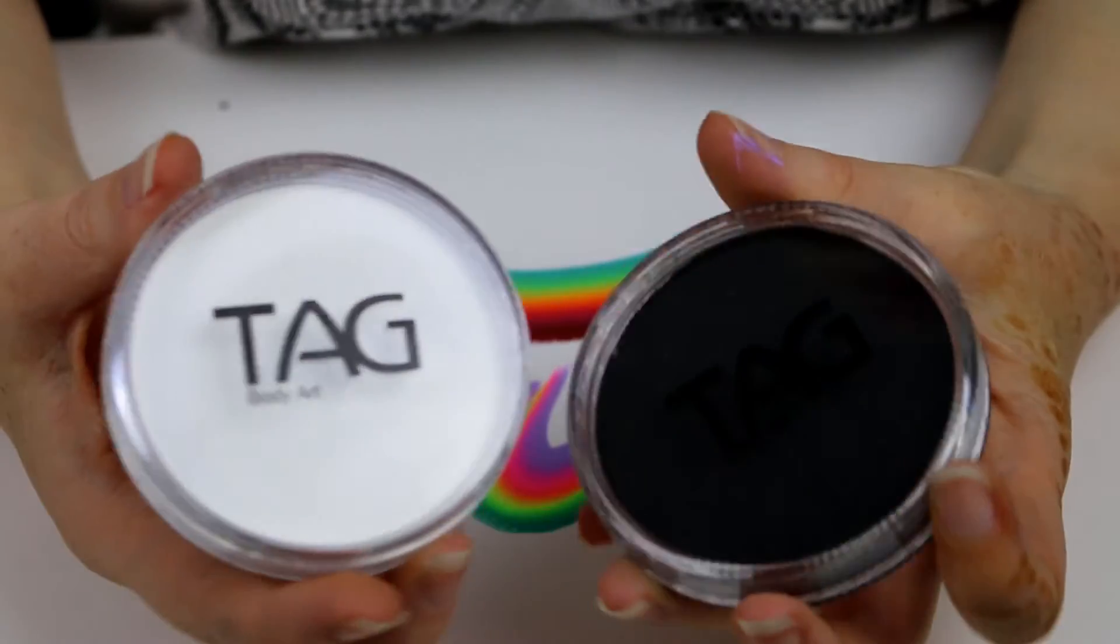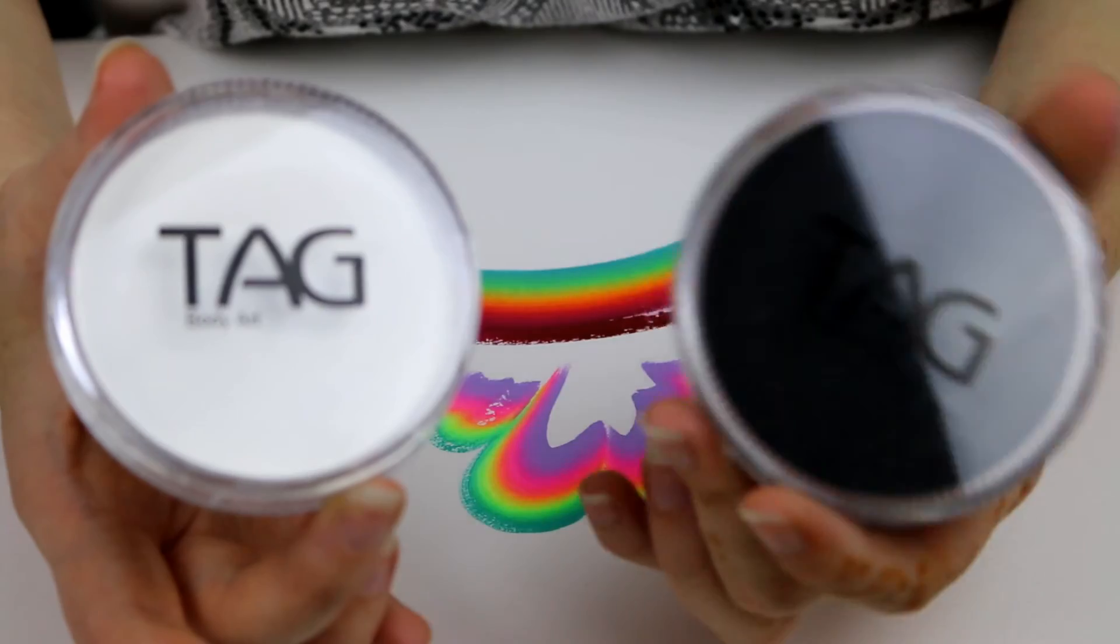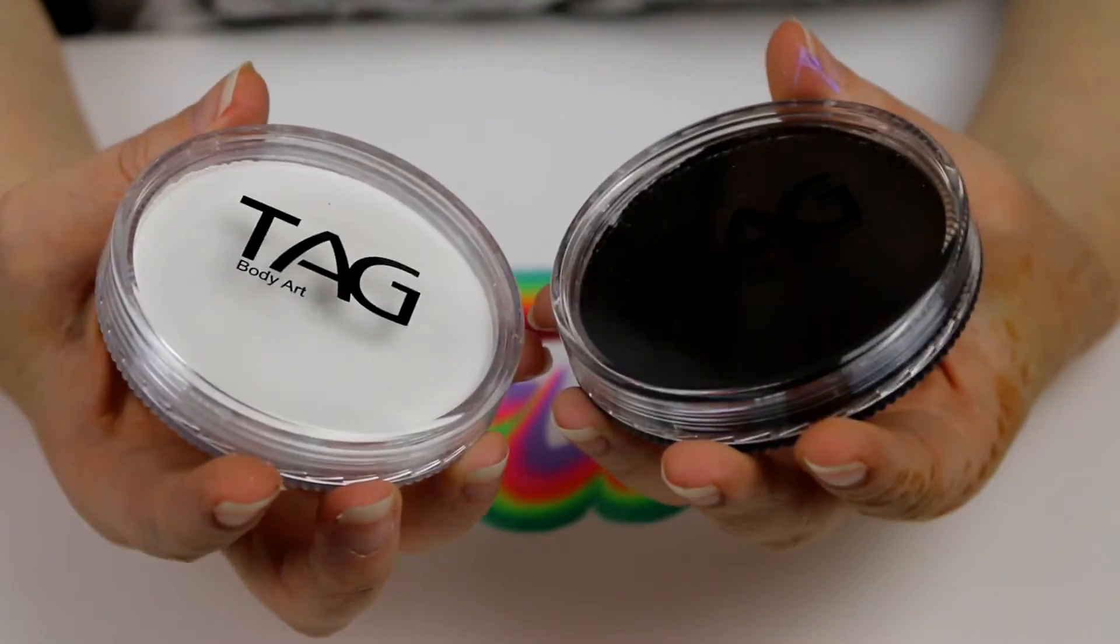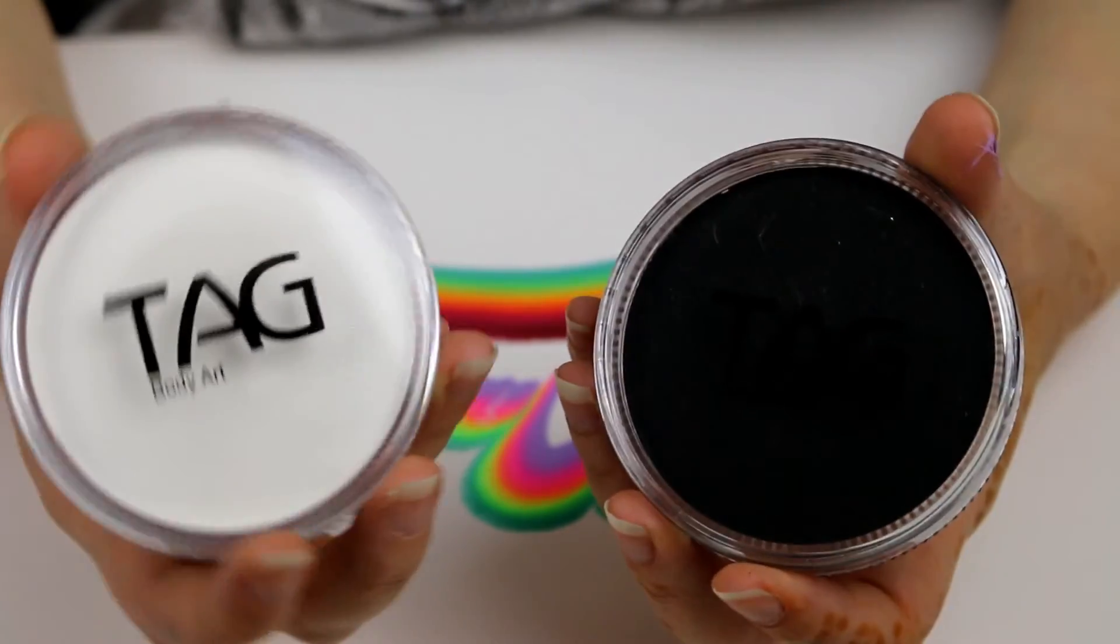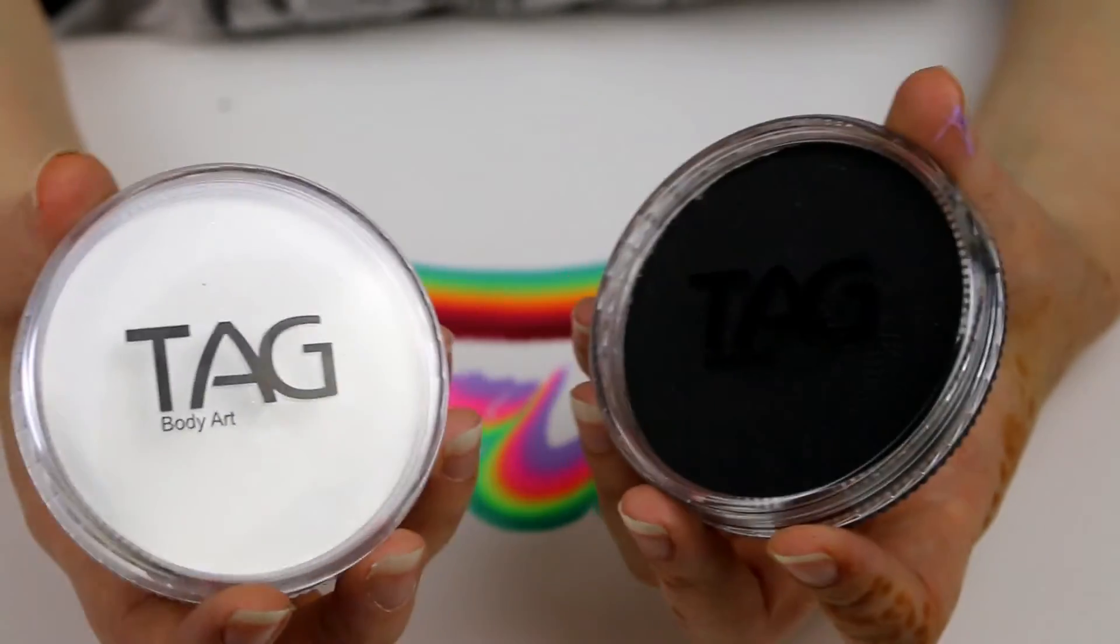Next up are these regular colors - regular white and regular black. I just use these for line work and also the white as a base for a skull or the muzzle and eyes for a tiger.